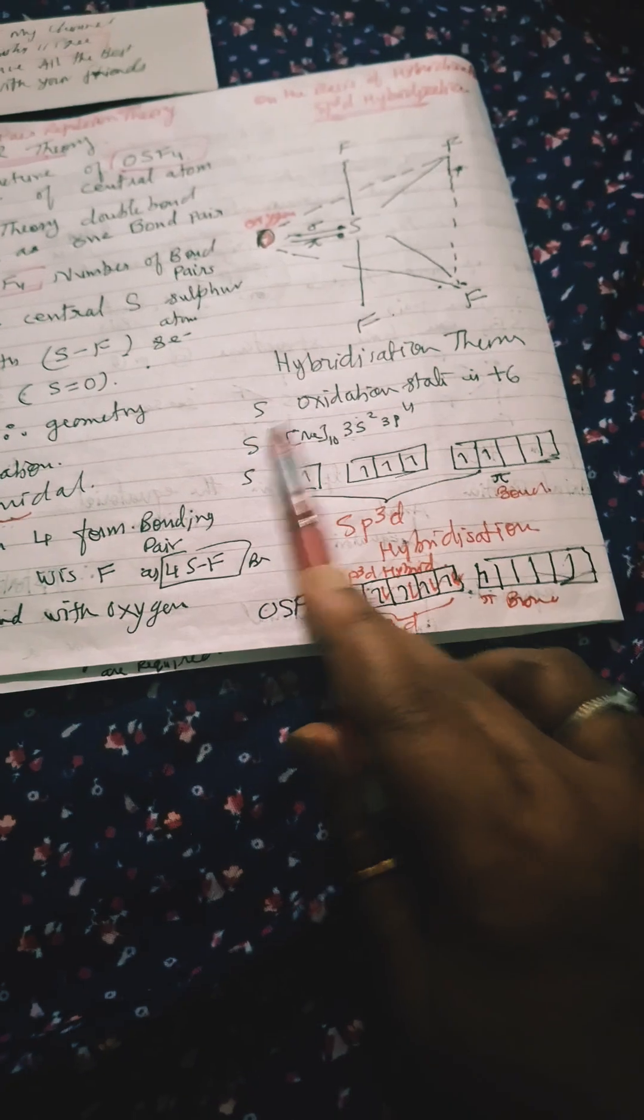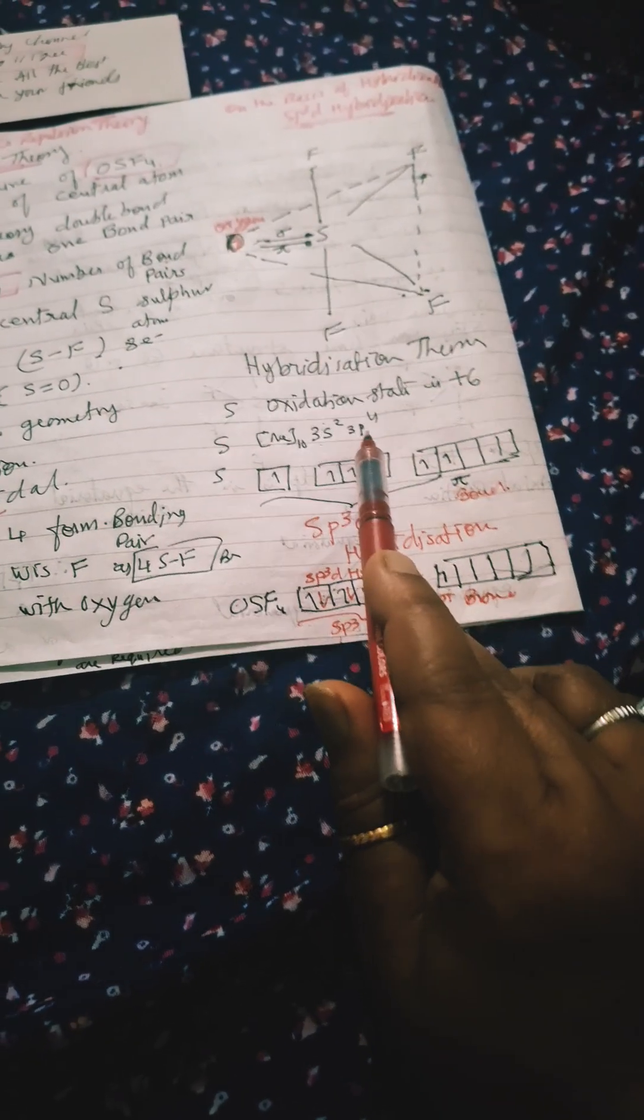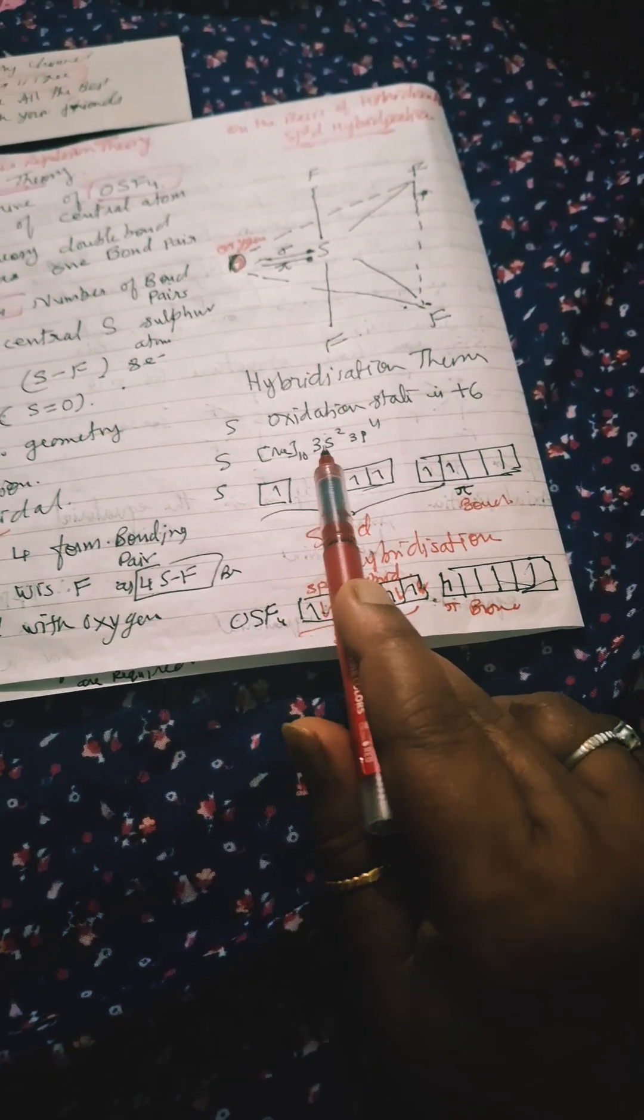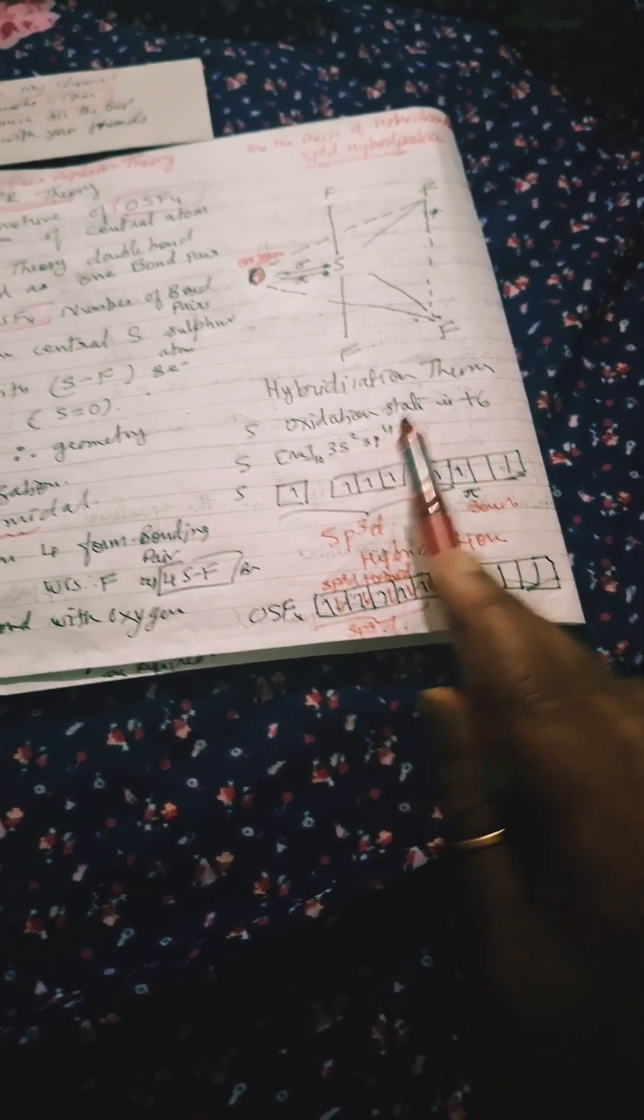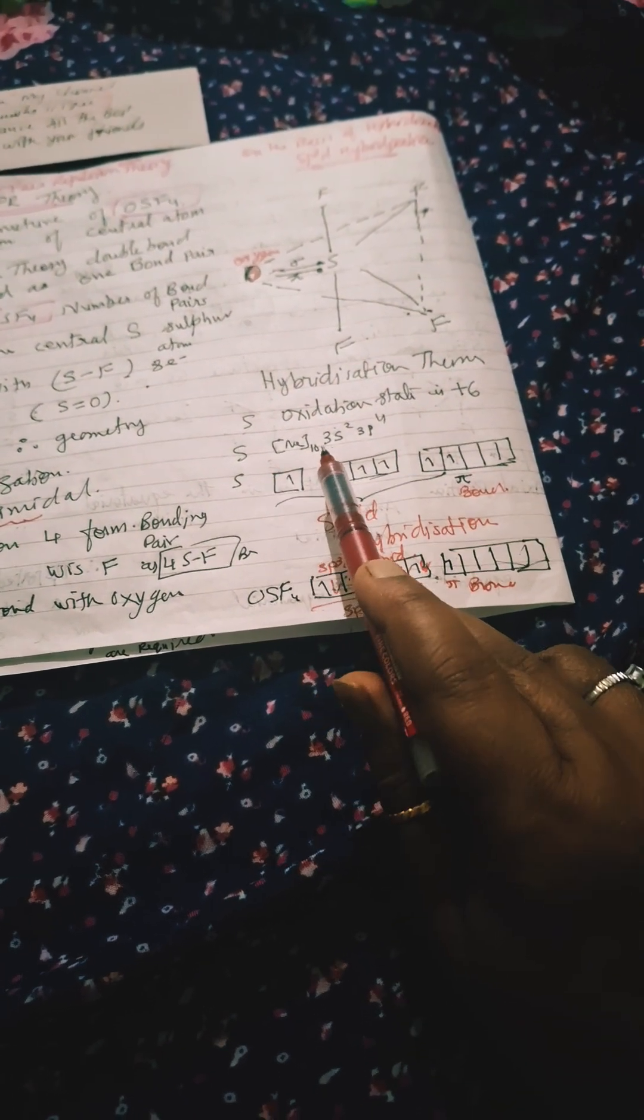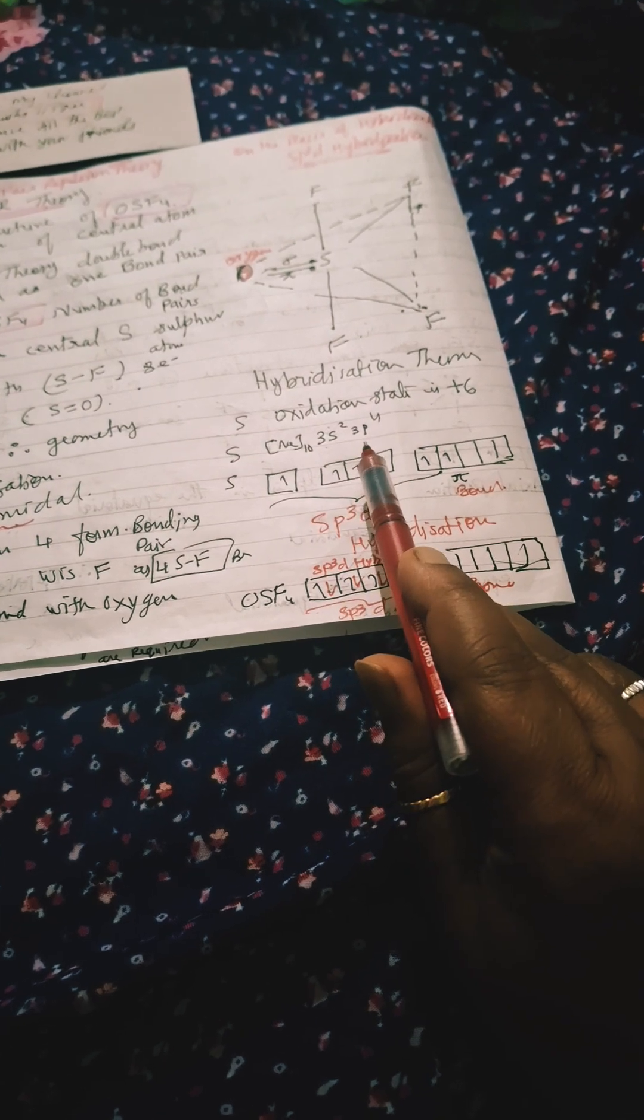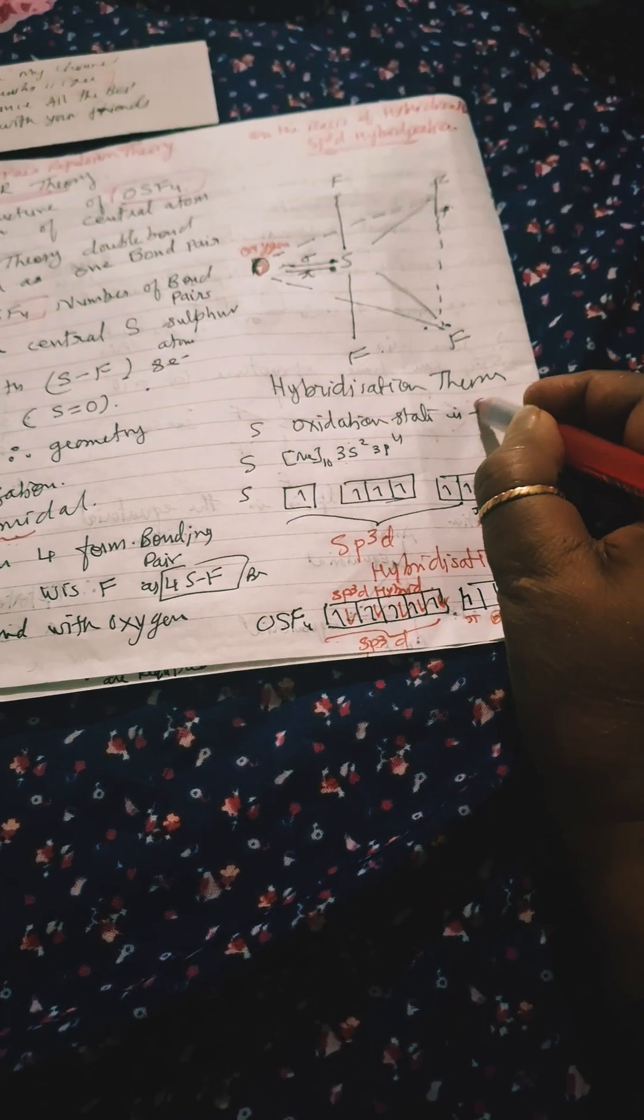On the basis of hybridization, we will discuss. Sulfur has six valence electrons in the outermost shell: neon 10, 3s2 3p4 configuration. Its oxidation state here is plus six.